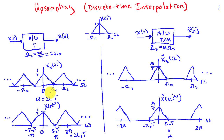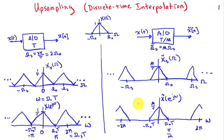We're going to start at a low sampling rate and process the signal to convert it to a higher sampling rate, which amounts to interpolating. So in the frequency domain, we want to go from the discrete-time Fourier transform on the left, and after upsampling we should end up with the discrete-time Fourier transform on the right, x̃(e^{jω}).